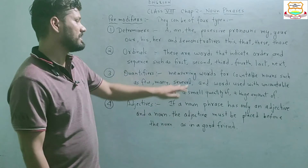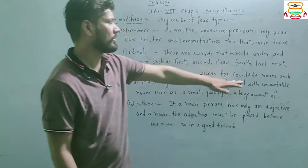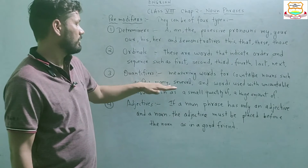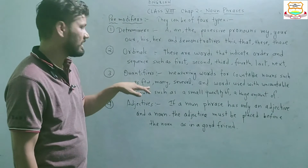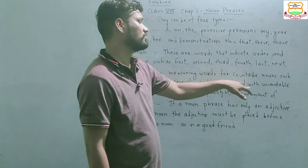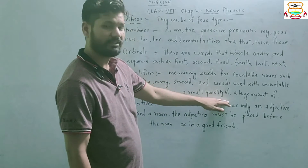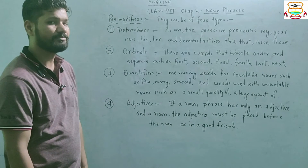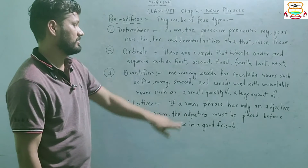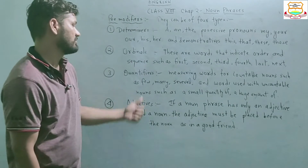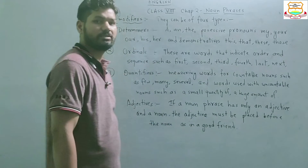Quantifiers are measuring words that tell about the quantity of something. For countable nouns, words such as 'few', 'many', 'several' are used as quantifiers. For uncountable nouns, phrases like 'a small quantity of' or 'a huge amount of' are used, where 'small' and 'huge' are the quantifiers.